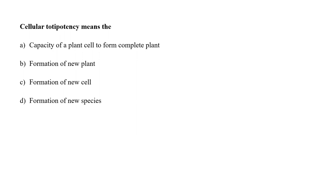Cellular totipotency means A. the capacity of a plant cell to form a complete plant, B. formation of a new plant, C. formation of a new cell, or D. formation of new species? Totipotency is the ability of a single cell to divide and produce all the differentiated cells in an organism. Examples of totipotent cells are spores and zygotes. The capacity to generate a whole plant from a single plant cell is called totipotency. A whole plant can be regenerated from any plant part called an explant in tissue culture. So the correct answer is option A.